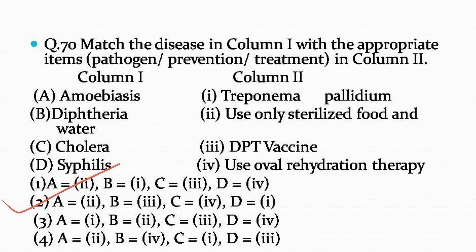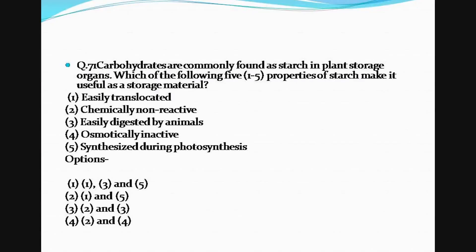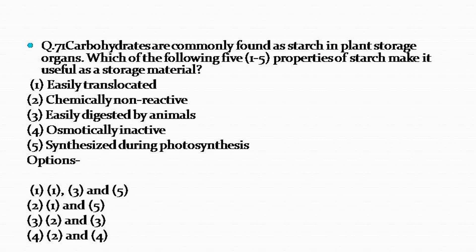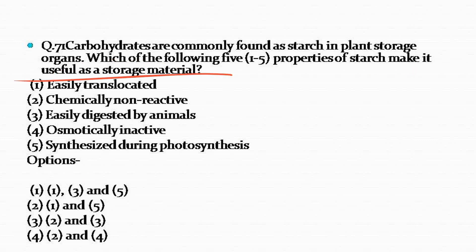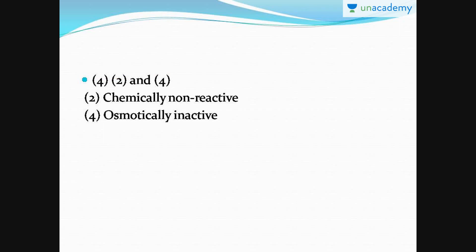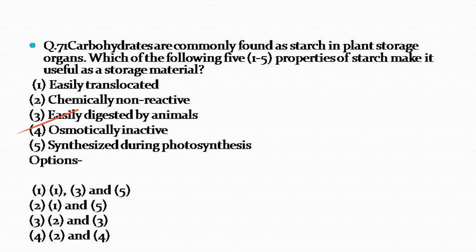Question number 71 — starch is the storage material in plants. You have to read these five properties of starch and tell which of them make it useful as a storage material. The right answer is option number four — the second and fourth properties make it useful as a storage material. Since you store starch for using it further, it needs to be stable to be used later on, not as soon as it is formed.